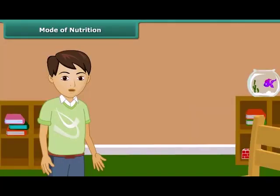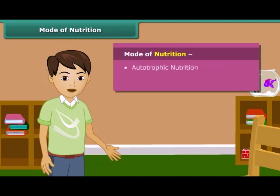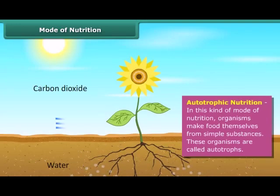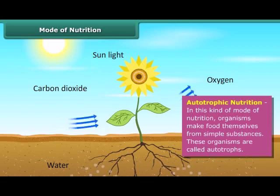Now let's know about the mode of nutrition. There are two types of nutrition modes: autotrophic nutrition and heterotrophic nutrition. The mode of nutrition in which organisms make food themselves from simple substances is called autotrophic nutrition, and these organisms are called autotrophs.